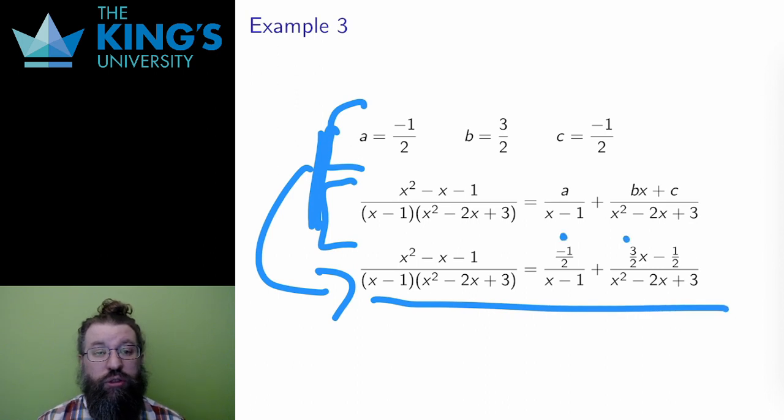The original rational function is now broken up into two pieces, and these are the simplest pieces I could have produced. One with a constant over a linear term, and one with a linear term over an irreducible quadratic term.